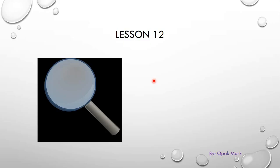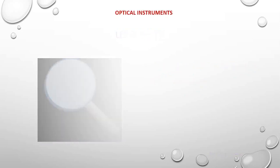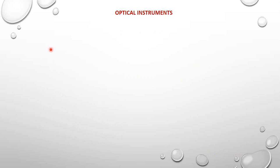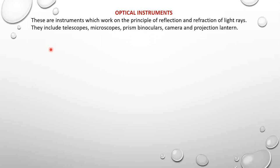Hello, welcome to lesson 12. In this lesson we are going to have the introduction to optical instruments and then we shall look at a simple microscope. Optical instruments are instruments that work on the principle of reflection and refraction of light rays, and they include microscopes, telescopes, cameras, projection lanterns, and binoculars.